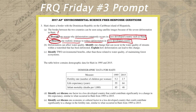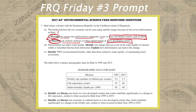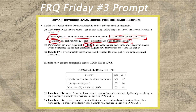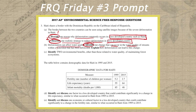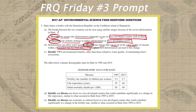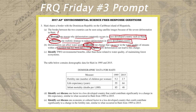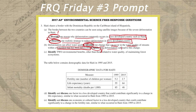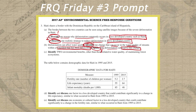In part B, we have a double prompt, which we can treat like two separate individual prompts. The first thing we'll do is circle 'identify' and write a one above it. What we need to identify is a change that can occur in water quality specifically in streams within a watershed that has been deforested — that's our modifier. In the second part, we have an explain prompt, which I circle and write a three next to it. We need to explain how deforestation can actually lead to this change, clearly connecting the deforestation to the change identified above.